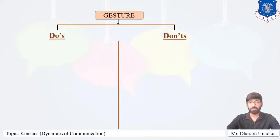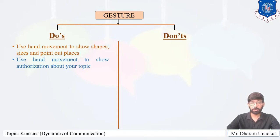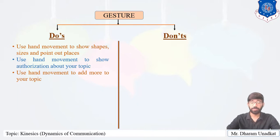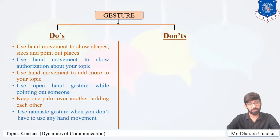Now let's look at the do's and don'ts of gesture. Gesture is the movement of our hands, head, face, etc. The do's of gesture: use hand movement to show shape, size, and to point out places. Use hand movement to show authorization about your topic. Use hand movement to add more emphasis to your topic. Use an open hand gesture while pointing out someone. Keep one palm over another holding each other. Use a namaste gesture when you don't need any other hand movement.